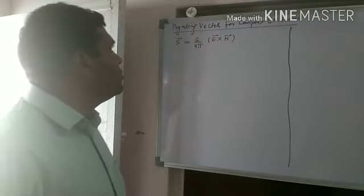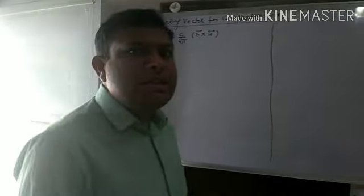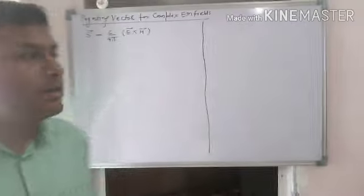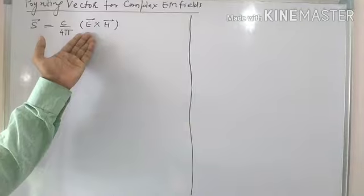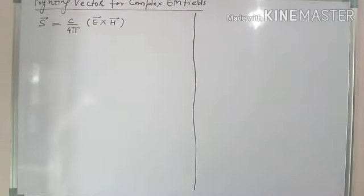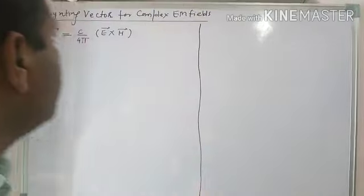Today we are going to discuss how the Poynting vector changes for the complex electromagnetic field. Remember this was the Poynting vector, it was essentially the cross product of the electric vector and the magnetic vector.